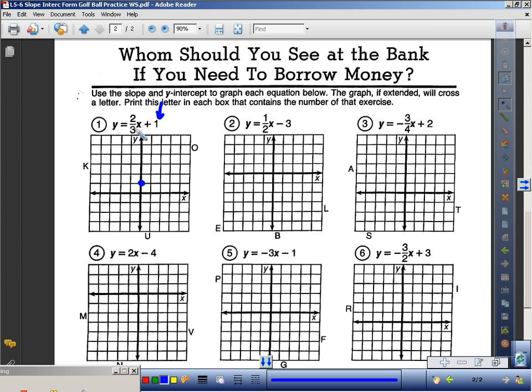My two-thirds is my slope. Two-thirds means I have a rise of two and a run of three. So from this point, I'm going to rise up two and I'm going to rise up one, two, run three. One, two, three.